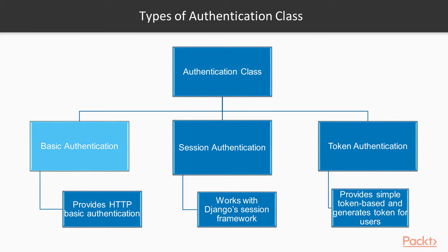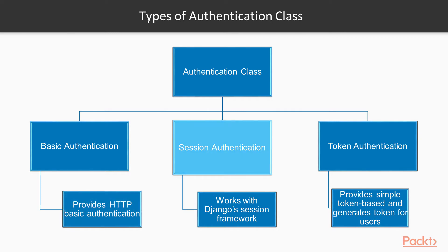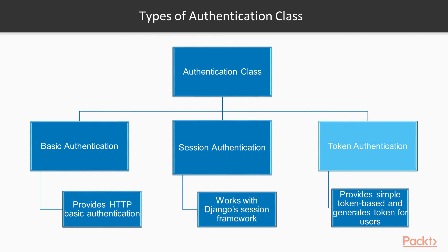The first one is basic authentication, which provides HTTP basic authentication against username and password. If used in production, we must make sure that the API is only available over HTTPS. Next is session authentication, which works with Django's session framework for authentication. The third one is token authentication, which provides a simple token-based authentication. The request must include the token generated for a user in the Authorization HTTP header with 'Token' as a prefix.